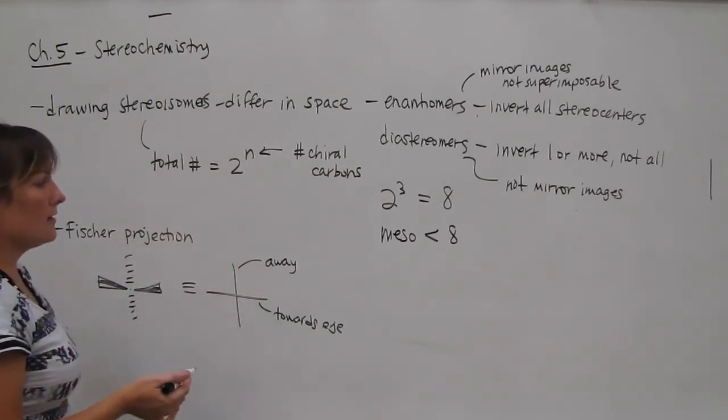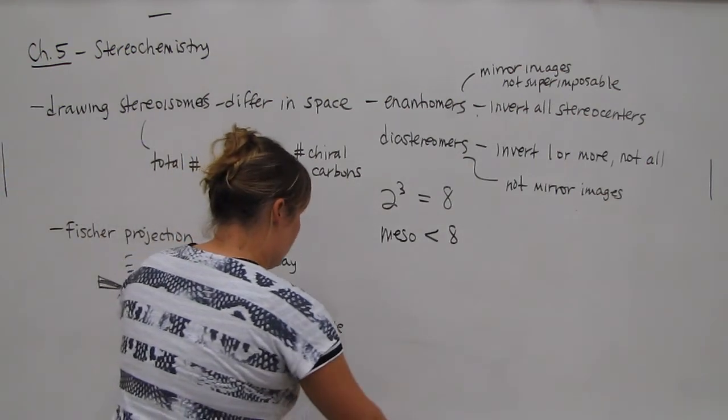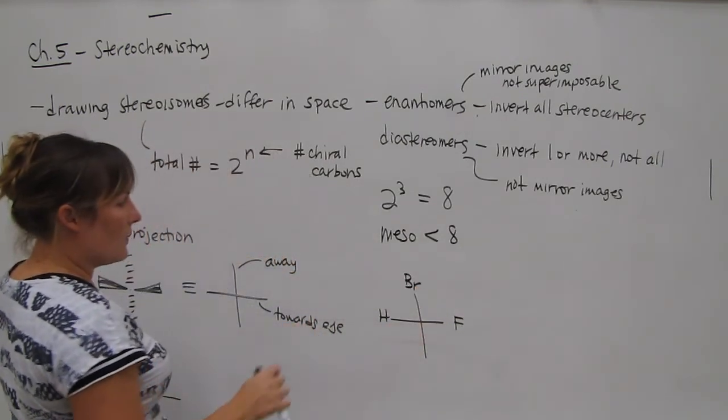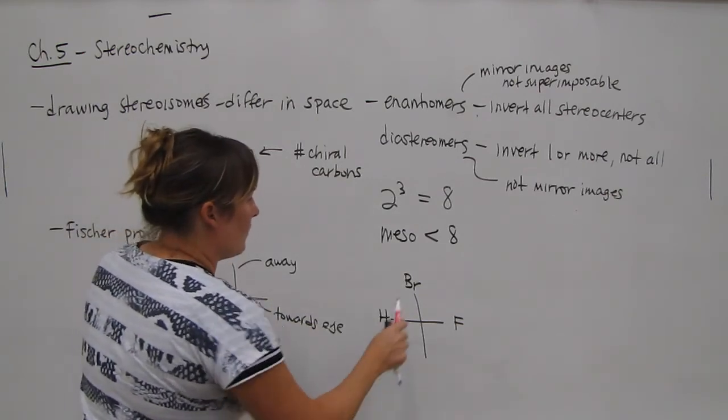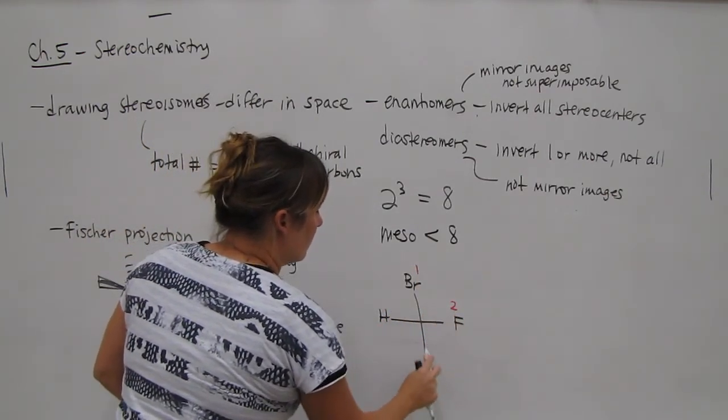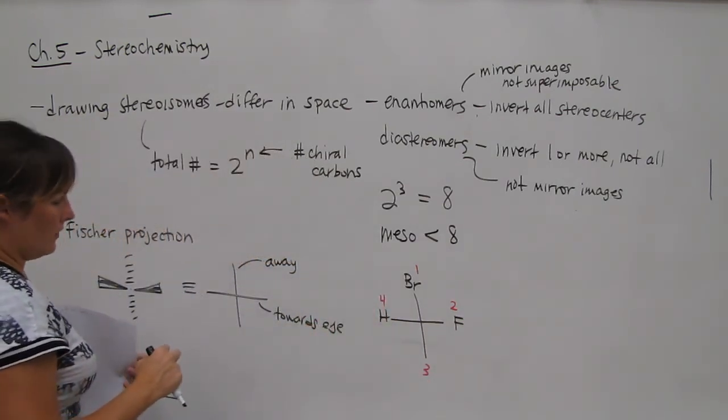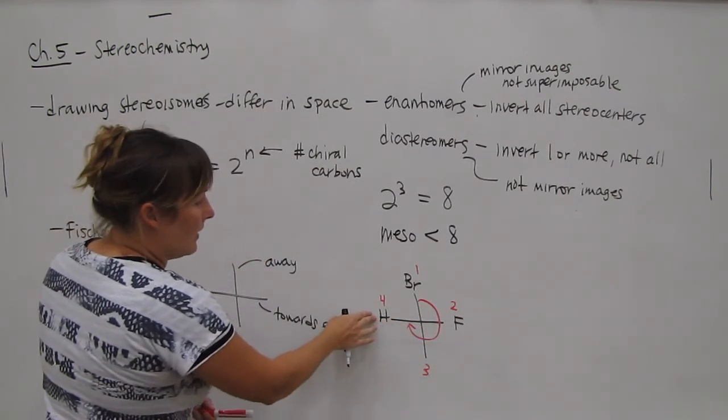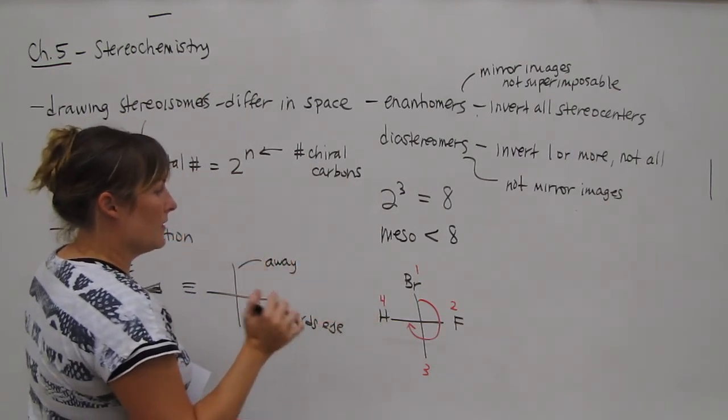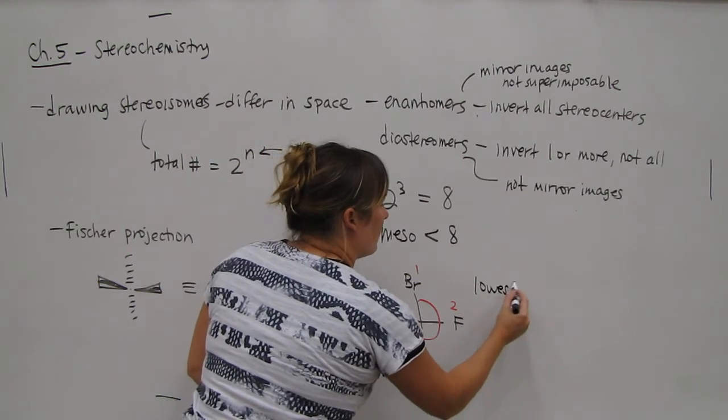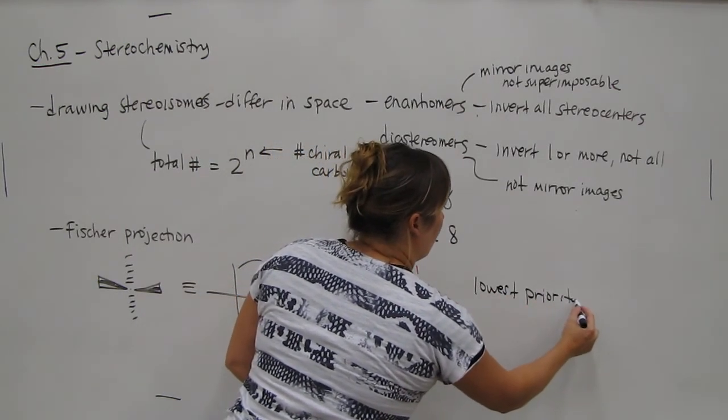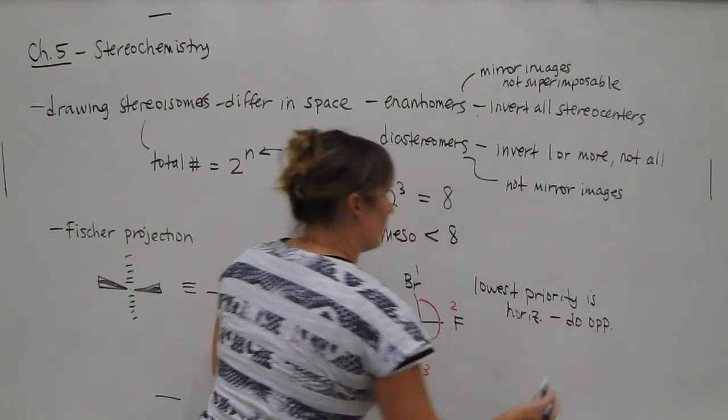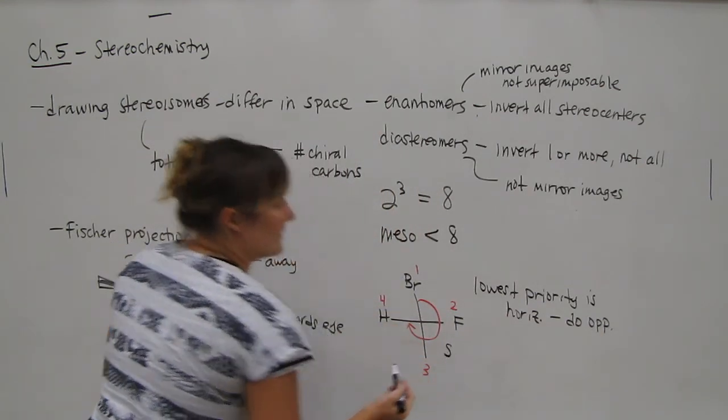You assign R and S to this notation, just like you did before. So let's just give this example. So bromine again would be 1, 2, carbon would be 3, and H would be 4. You assign the circle from 1, 2, 3. However, you have to keep in mind if lowest priority is horizontal, you do the opposite. So lowest priority is horizontal, and do the opposite. And so it looks like R, but it's S in this case.